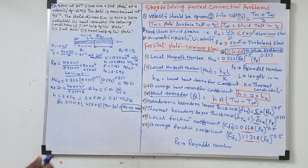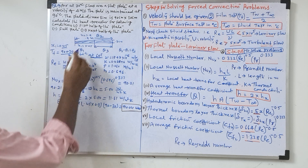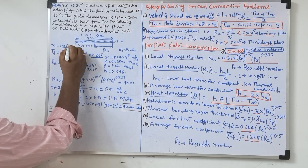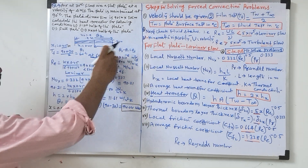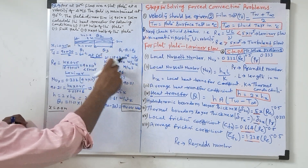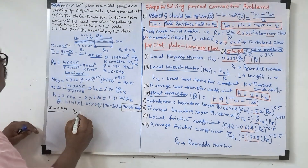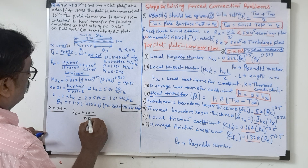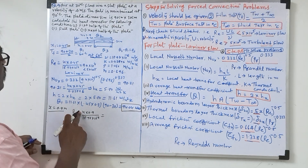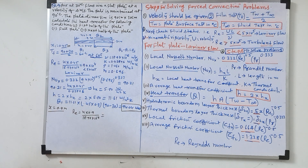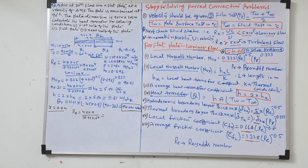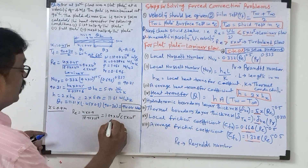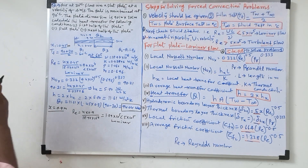Now similarly we will find Q2. Here we take x equal to 0.9 meter. The fluid temperature values remain the same — all constant values will be same. Reynolds number equals 4 into 0.9 divided by 18.97 into 10 power minus 6, giving 1.89 into 10 power 5 — which is also less than 5 into 10 power 5. So this flow is also laminar.